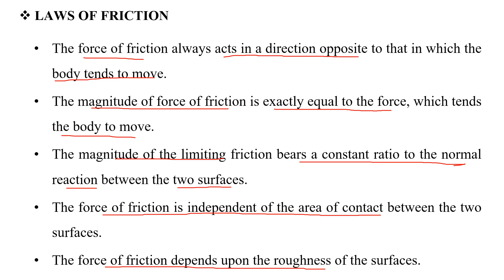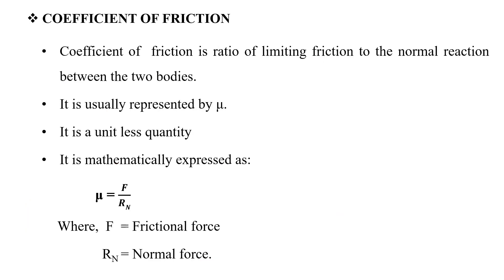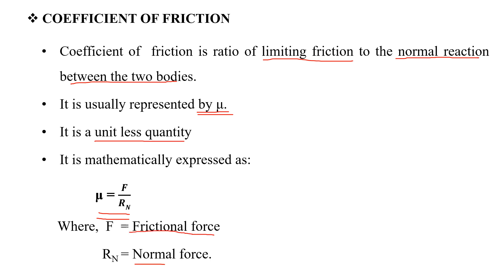The force of friction is equal to the normal reaction between the two bodies at the point of limiting friction. The ratio of the limiting friction to the normal reaction is called the coefficient of friction, represented by mu (μ). We express this as μ = F / Rn, where F is the frictional force and Rn is the normal reaction.